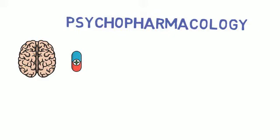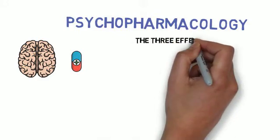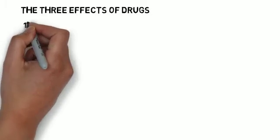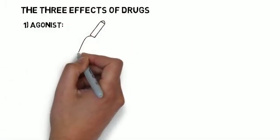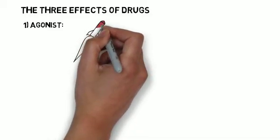Drugs that have psychological impacts tend to fall into one of three categories. Some drugs are agonists, which means that they increase the effects of a particular neurotransmitter system, such as dopamine.